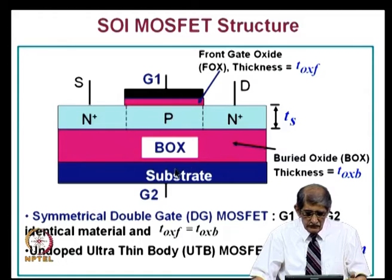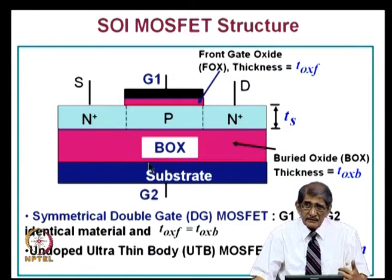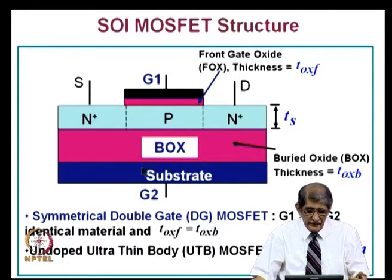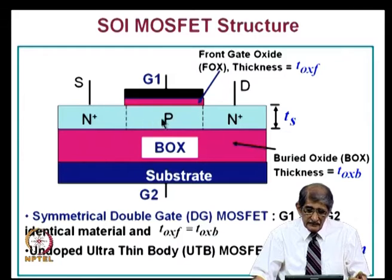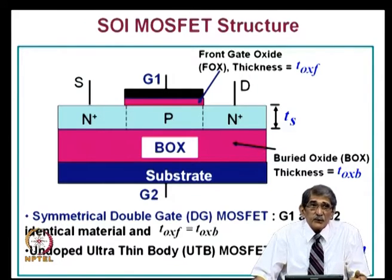For a symmetrical double gate (DG) MOSFET, G1 and G2 are identical materials and T_ox_F equals T_ox_B. These are double gate MOSFETs — they can be symmetrical or non-symmetrical. The channel region can be doped or even undoped.